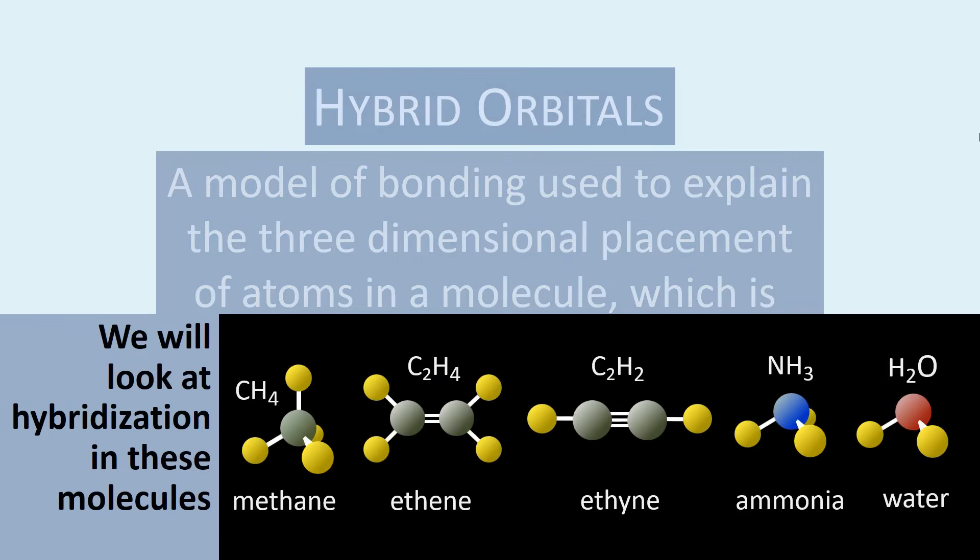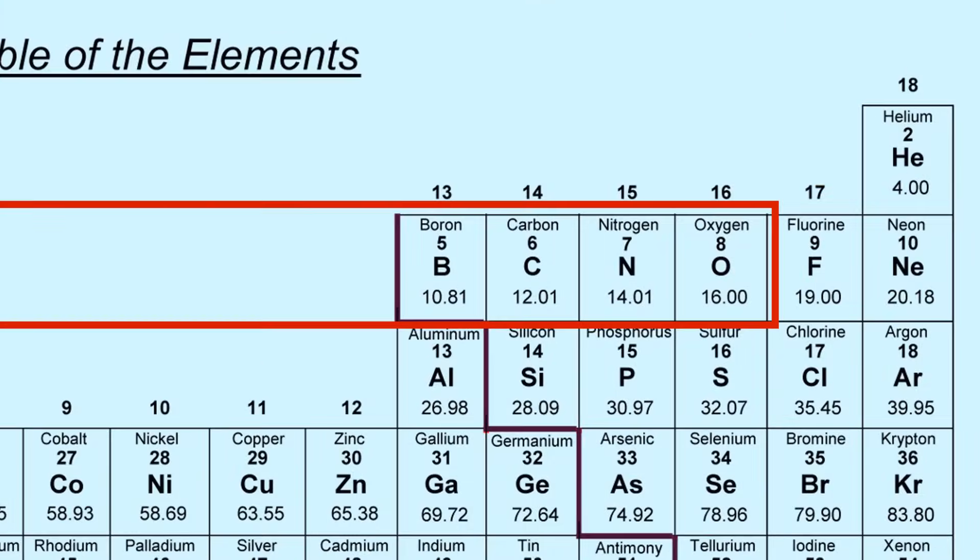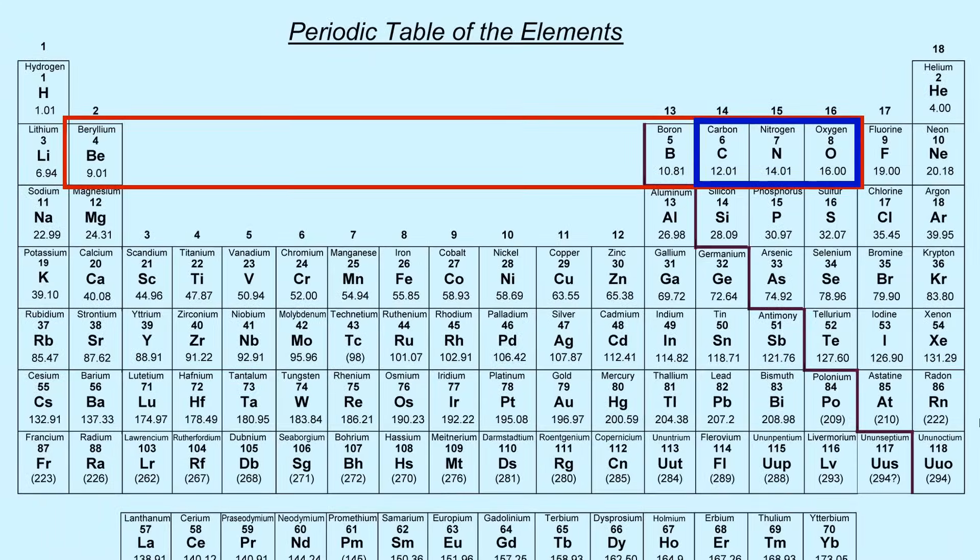In this video we will look at methane, ethene, ethyne, ammonia, and water as our models for hybridization. There is only a small group of atoms in the second period that the model really works for, but among those are carbon, nitrogen, and oxygen, which make up the vast majority of molecules that exist on earth. So the model applies to a limited number of elements but it applies by far to the majority of molecules.